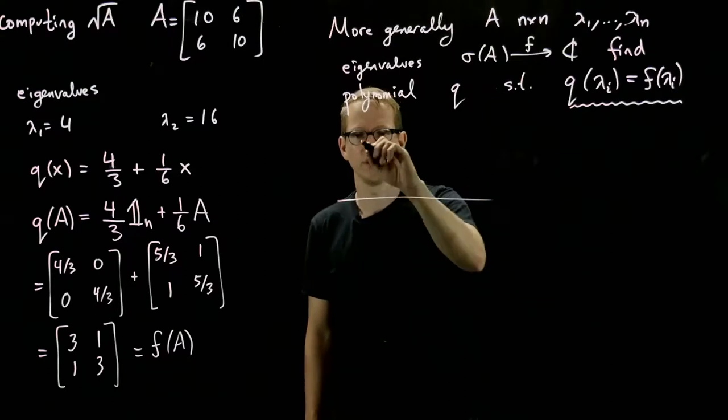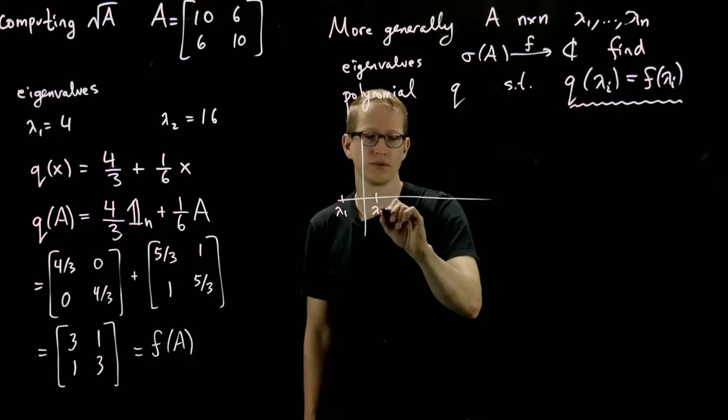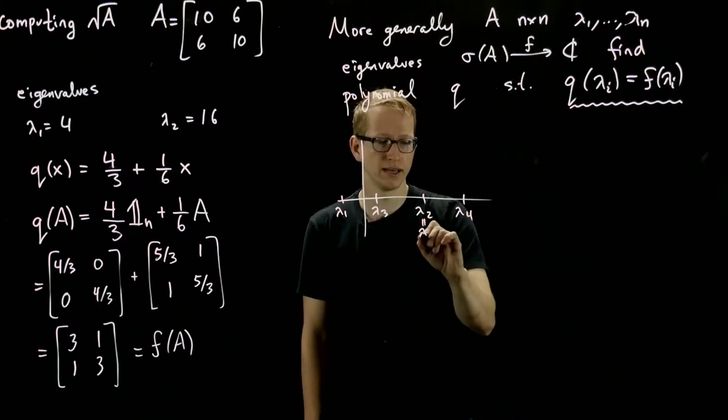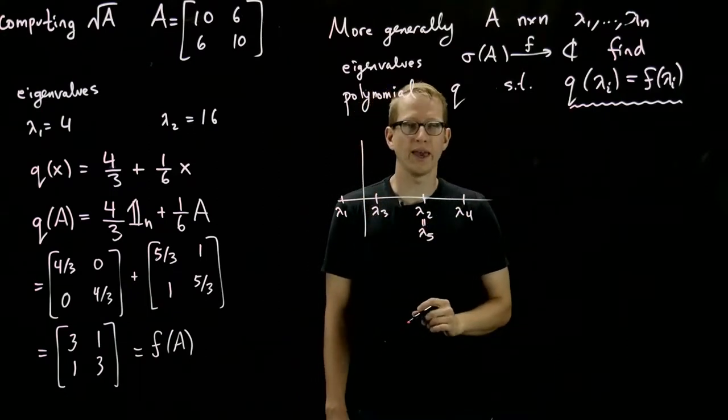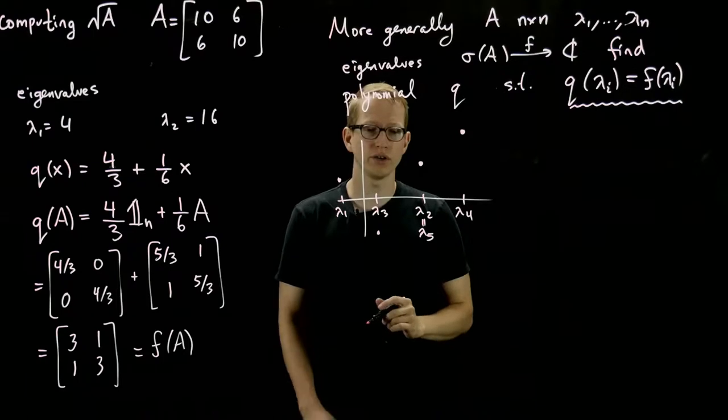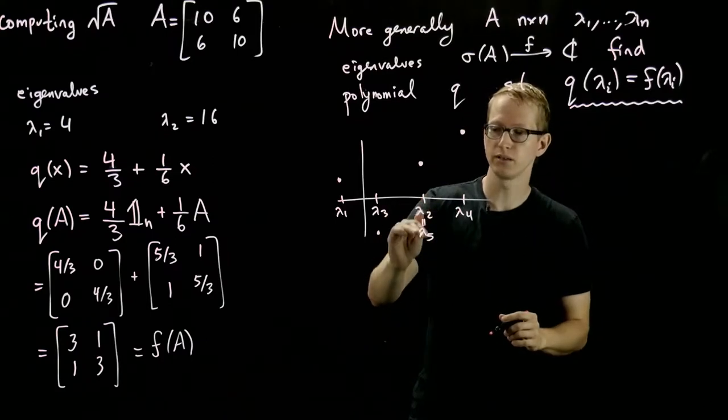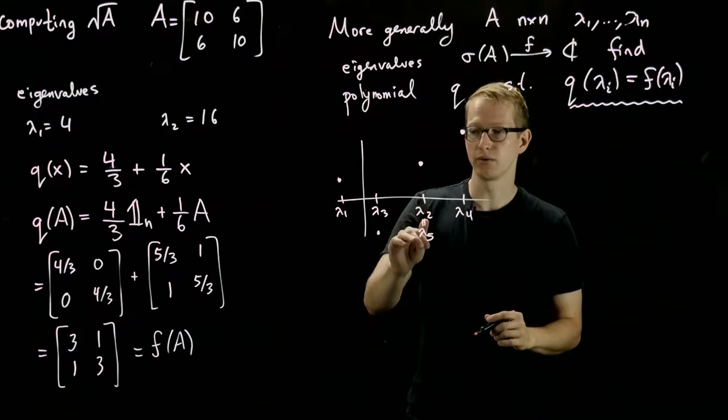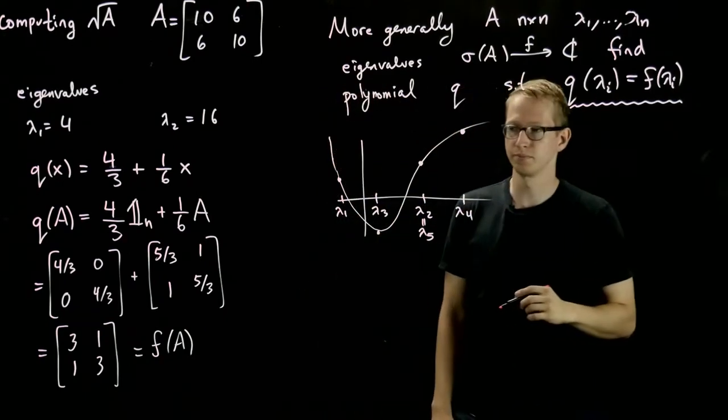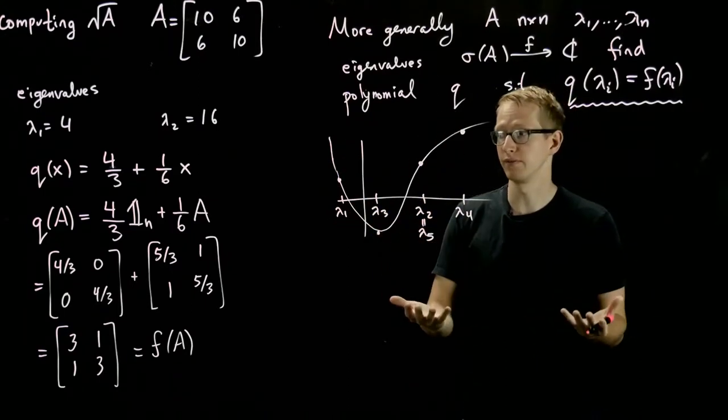So let me draw this visually. Let's just assume everything is real, so it's simple to draw. If we have lambda 1 here, lambda 3 here, lambda 2, maybe lambda 4 somewhere out here, and let's say lambda 2 equals lambda 5, and if we apply F to these numbers, what we're going to try to do is find the polynomial that fits through these 4 points. The reason it's 4 is because two of our eigenvalues are repeated. If we had n distinct eigenvalues, we would have n distinct points through which we would have to find a polynomial.